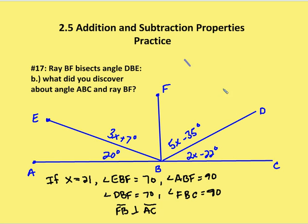So we know that FB is going to be perpendicular to ABC. We have 70 degrees here, 70 degrees here, and 20 degrees on each side as well. So BF is going to be perpendicular to AC.